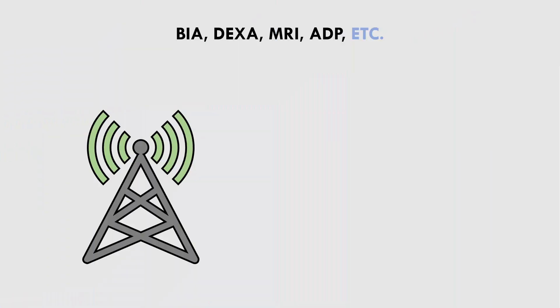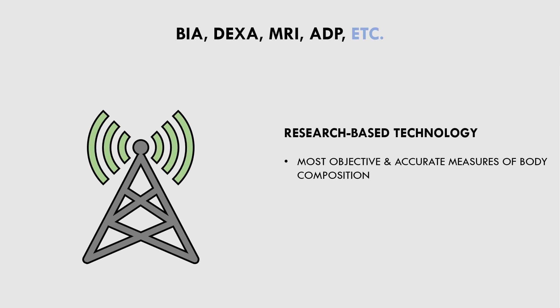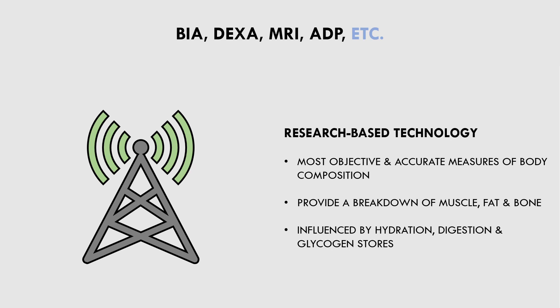The next method of assessing body composition is research-based technologies like bioelectrical impedance, DEXA scans, and more. There are numerous advanced technologies to assess body composition, but they are all fairly similar in accuracy and the results they provide. These methods are generally the most accurate way of assessing body composition. Most of these tools provide a breakdown of what tissues total body weight is composed of — usually giving indications of muscle mass, bone mass, and body fat. These methods are considered the gold standard assessment. However, it should be noted that they are also influenced by hydration status, digestion status, and glycogen levels. And although this is the most direct measure of body composition, it is not necessarily the most direct measure of what trainees are after, which is visual aesthetics.